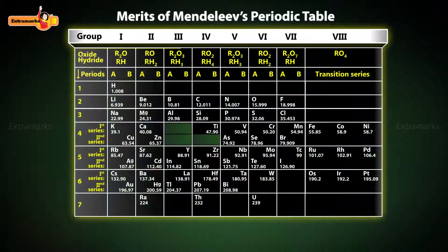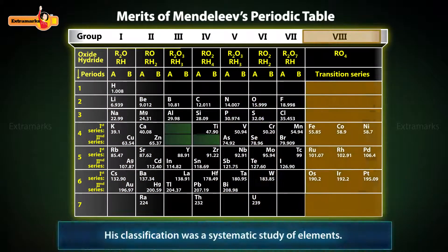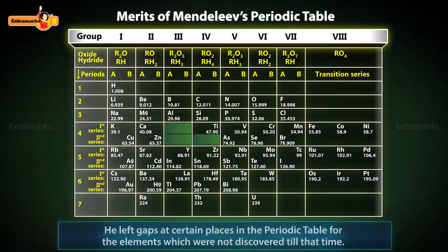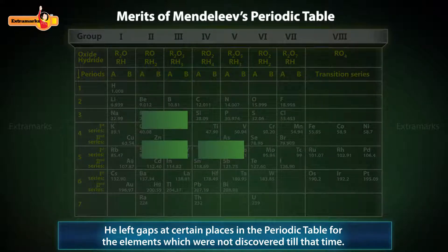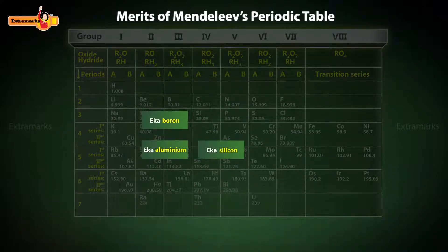The properties of elements could be studied in a group rather than individually, so his classification was a systematic study of elements. He left gaps at certain places in the periodic table for elements which were not discovered till that time, and he foretold the properties of these elements based on their position.